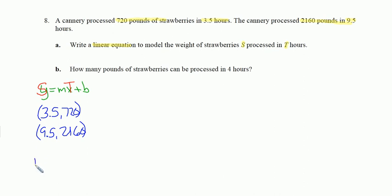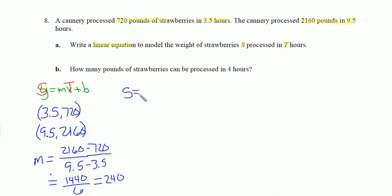I need to set up my points accordingly. I have 3.5 hours gives me 720 pounds, and I have 9.5 hours gives me 2,160 pounds. Let's find a slope for those values. So I've got the second y, 2160, minus the first y, 720, divided by the second x, 9.5, minus the first x, 3.5. So 2160 minus 720 is 1440, divided by 6. 1440 divided by 6 is 240. So my slope is 240. I just need to go find that intercept.